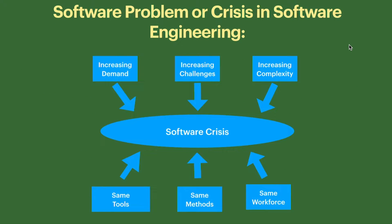There are a few reasons for software crisis. First is increasing demand — if the demand for software is increasing but we are not producing according to that demand, it becomes a crisis. Second is increasing challenges — if we are facing challenges in development and not fulfilling requirements. Third is increasing complexity — if the software is very complex to develop, that is another reason for software crisis.